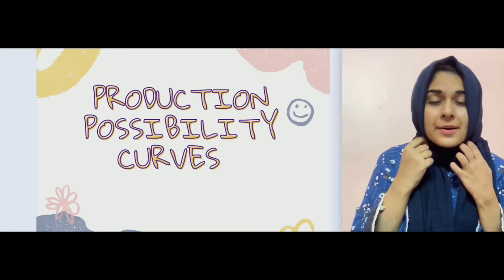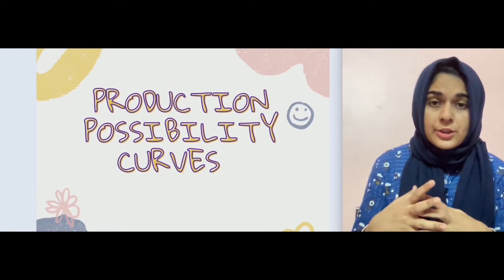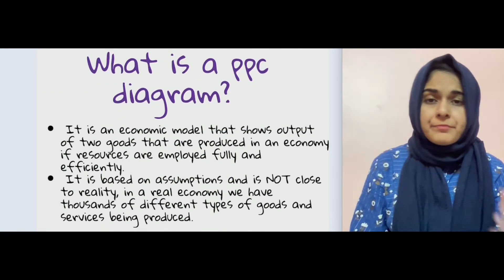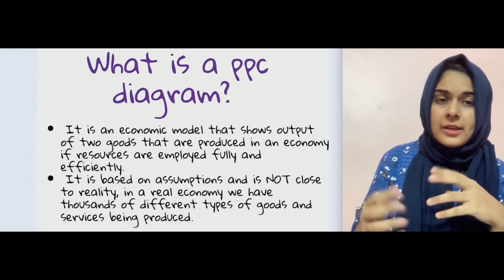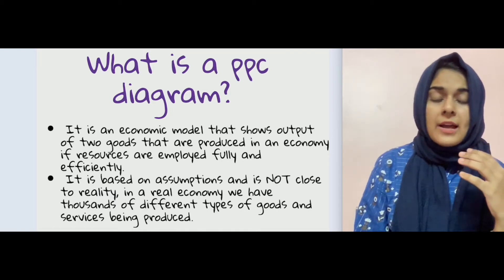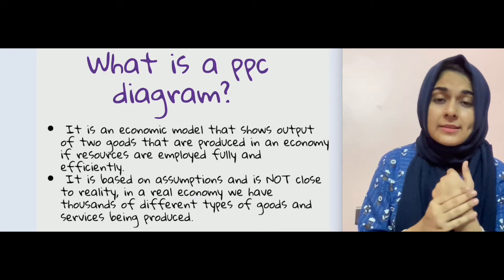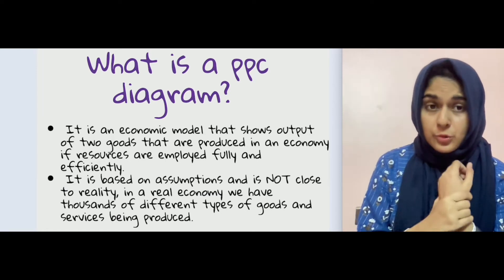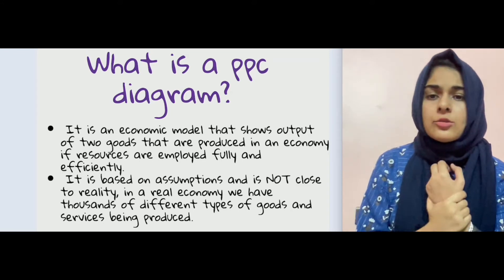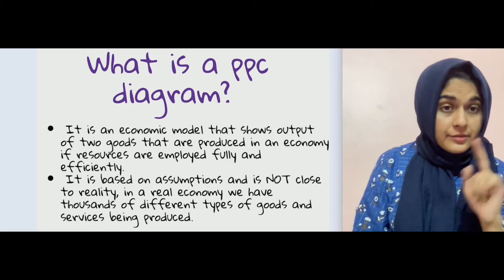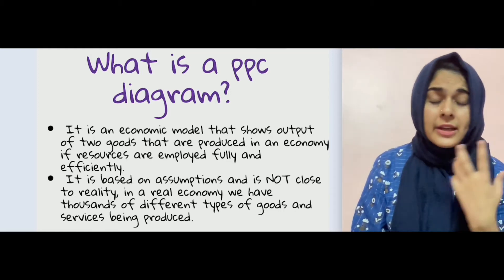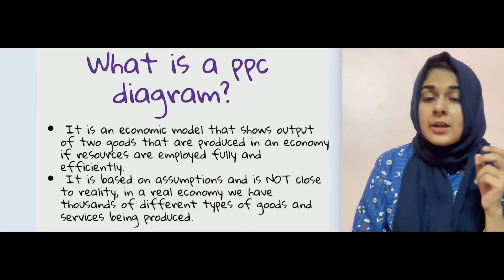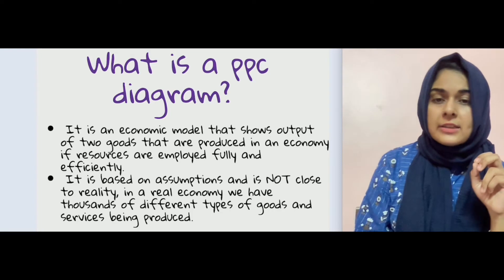Production possibility curves are linked with the concepts of opportunity cost, scarcity, and making choices. It's an economic model that shows the output of two goods — you have an x-axis and a y-axis, one product on each. The assumption is that only two products are being made in an economy, which is not close to reality since real economies produce thousands of products simultaneously. So it is based on assumptions and is not very close to reality.